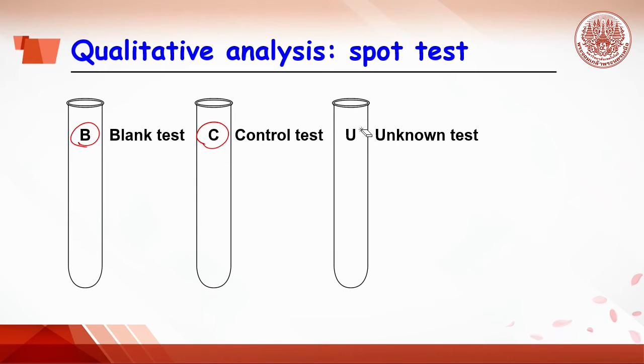The last test tube labeled with U means unknown ion. The unknown sample will be added. If it reacts with the same reagent as control, the positive or negative test will be shown depending on what ions are in the unknown.